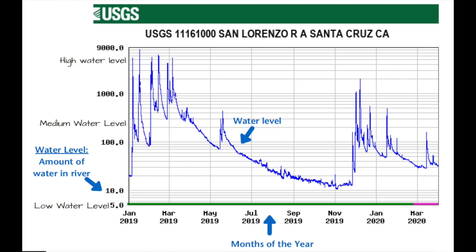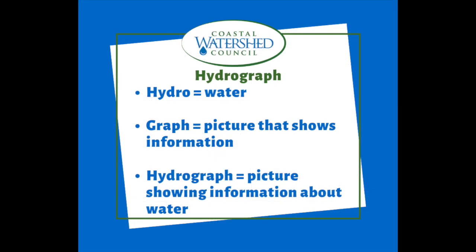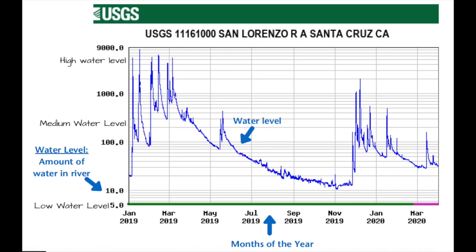We can use our observations from those pictures, but we can also use information. We're going to be looking at something called a hydrograph. This is a hydrograph right here, and it shows you lots of information. Take a moment to just look at this graph — what stands out to you, what do you notice? Go ahead and write down some thoughts. What information might you be able to learn from this graph? Pause the video if you want to spend more time looking at it. A hydrograph shows us information about water — hydro means water and graph is a picture that shows us information.